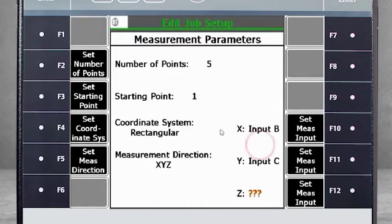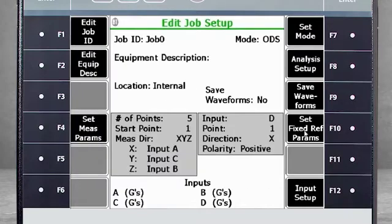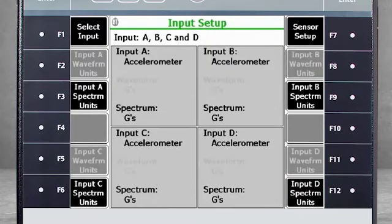Now you need to specify your inputs. As we covered earlier in the video, your X is on channel A, Y on channel C, and Z on channel B. Back on the edit job setup screen, you can configure the sensors using F12 input setup. We are using 4 accelerometers.